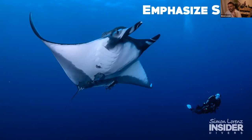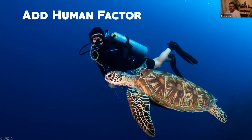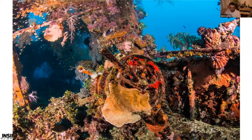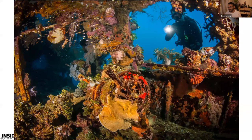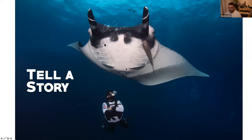You can also emphasize size by putting the model further away than the subject, making the subject look huge and the human look tiny. These are giant oceanic manta rays in Socorro — they're not that giant, but they look great when you have a small diver in the back. It also adds a human factor, making the bonding between human and nature really clear. It can really enrich a picture — here's the bridge of the Fujikawa Maru in Truk Lagoon without a diver and with a diver, and to me it's a much better sense of exploration when you have the human in the picture.